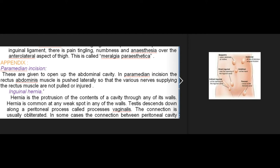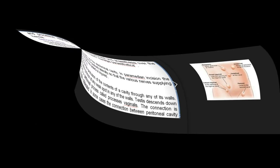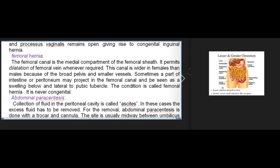Paramedian incision: these are given to open up the abdominal cavity; in a paramedian incision the rectus abdominis muscle is pushed laterally so that the various nerves supplying the rectus muscle are not pulled or injured. Inguinal hernia: hernia is the protrusion of the contents of a cavity through any of its walls, common at weak spots. The testis descends along a peritoneal process called processus vaginalis; in some cases the connection between the peritoneal cavity and processus vaginalis remains open, giving rise to congenital inguinal hernia.